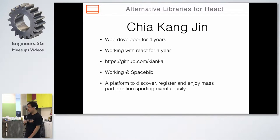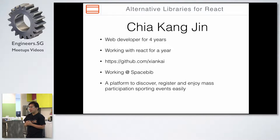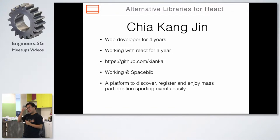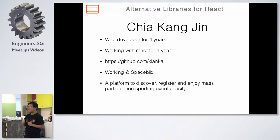A quick introduction. I'm Kang Jing, and I've been doing web development for four years already, but in the past year I've started working with React, and I have to say it's quite a paradigm change. I'm working at SpaceBip, where we are a platform to discover, register, and enjoy mass participation events, especially running.